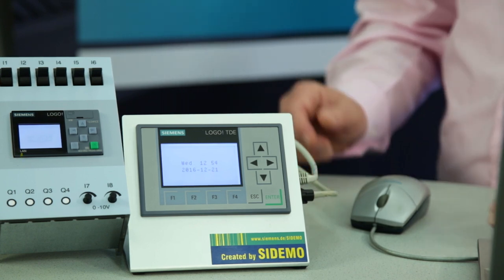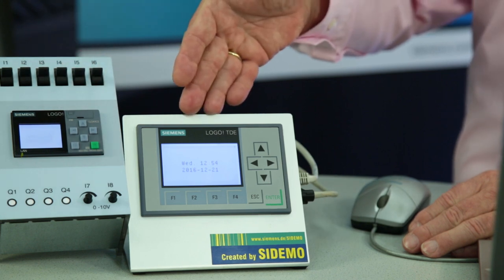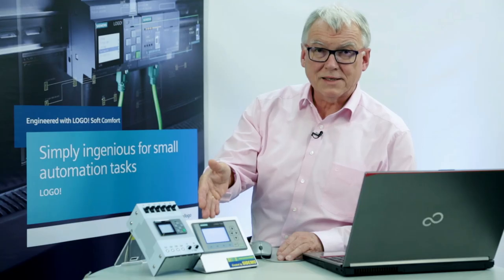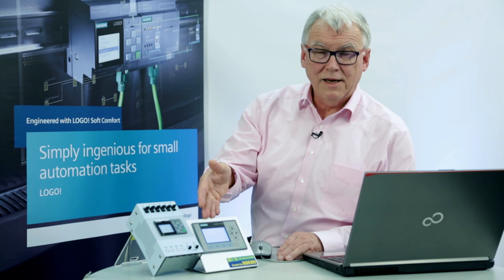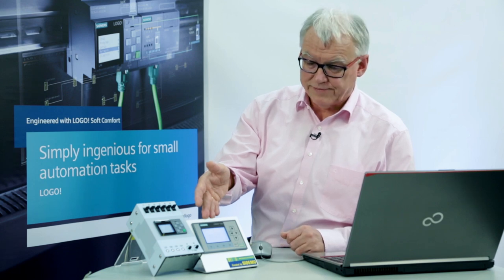The following setting can be made either on the LOGO base device or at the external text display unit. The text display unit offers the advantage that I can mount it a long way away from the control cabinet, for example in the office of the facility manager.